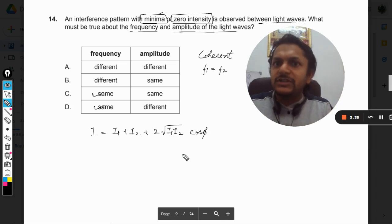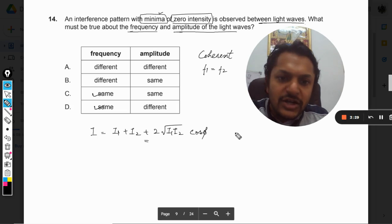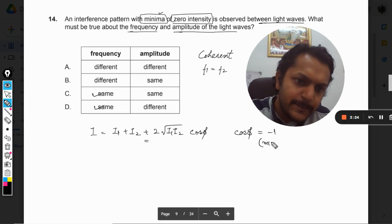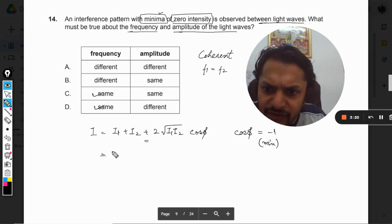Now we want to find the minimum value of this. How can you create a minima here? Well, if we are able to subtract it, so we put this condition that cos φ is equal to minus one because we want it to minimize.